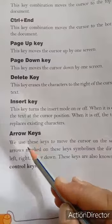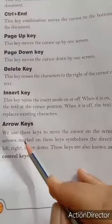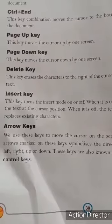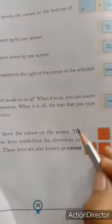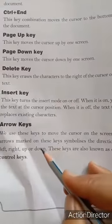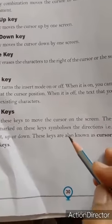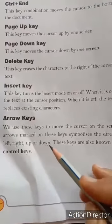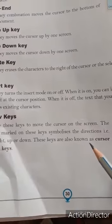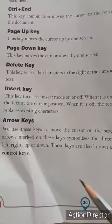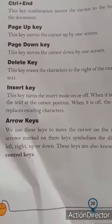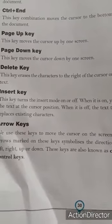Next is arrow keys. We use these keys to move the cursor on the screen — इन keys को cursor को screen पर move कराने के लिए, एक से दूसरे place पर ले जाने के लिए प्रयोग करते हैं। The arrows marked on these keys symbolize the directions — left, right, up, or down। These keys are also known as cursor control keys — इन keys से हम cursor को four directions में control कर सकते हैं: up, down, left, right। Now chapter four is complete.